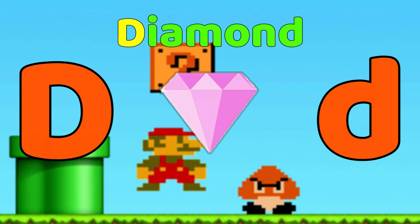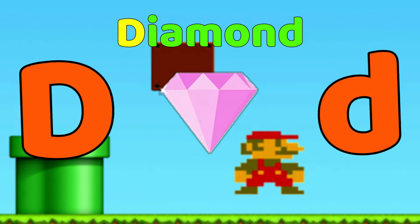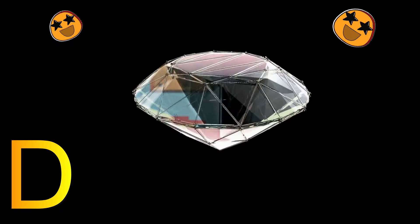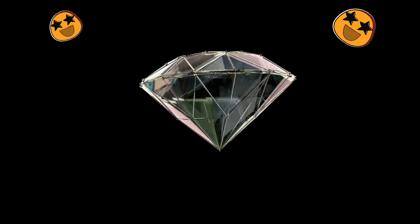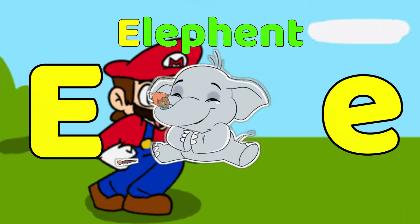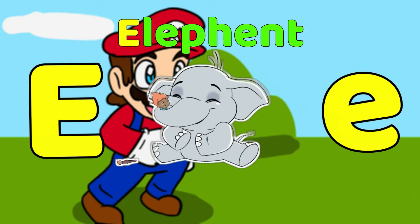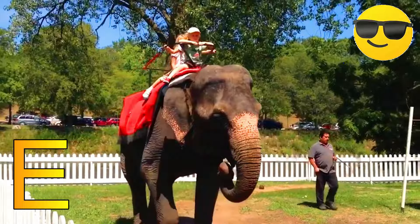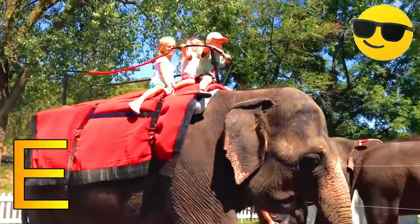D is for Diamond, D-D-Diamond, D-Diamond. E is for Elephant, E-E-Elephant, E-Elephant.